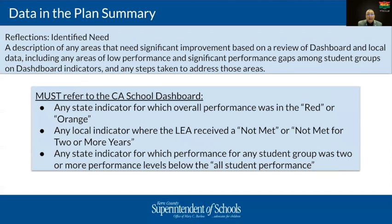Data also lives in the identified needs section in the plan summary. The outcome data you collect will have a place in multiple sections. This prompt calls for specific data identified in your outcome data. In the identified needs section, there are requirements referring back to the dashboard — looking at overall performance in red or orange, even though that data may be older, as well as any local data. This also calls out any state indicator where performance for any student group is two or more performance levels below all student groups. Data lives in multiple areas, so don't duplicate your efforts. I'm now going to turn it back over to Lily.